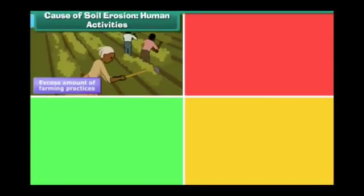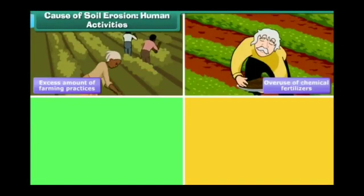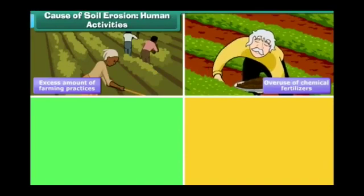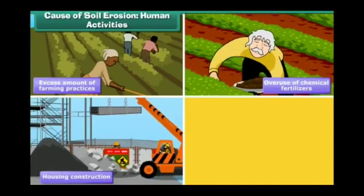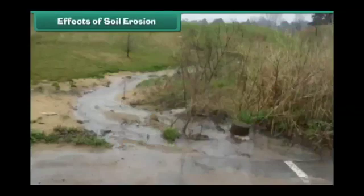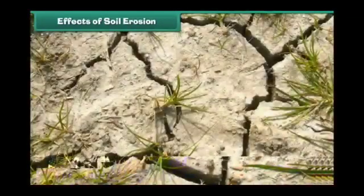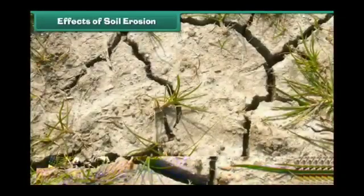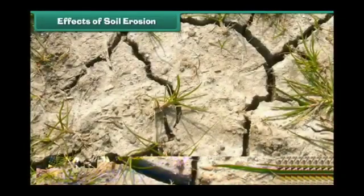Some of these human activities include deforestation, overgrazing by animals, improper or excess amount of farming practices, trail building, overuse of chemical fertilizers, housing construction, and mining.